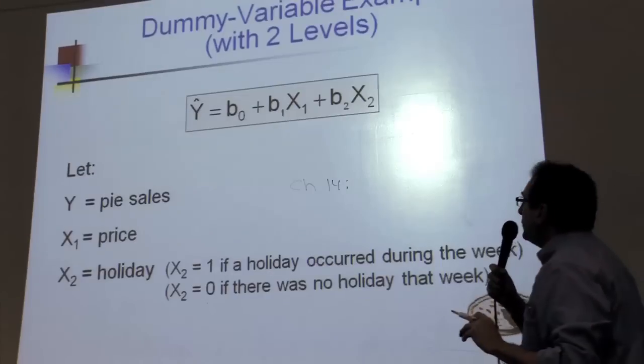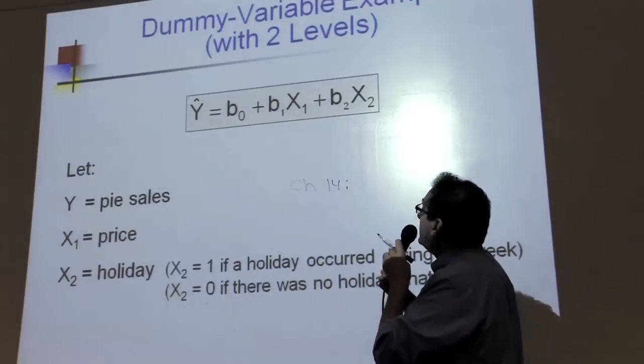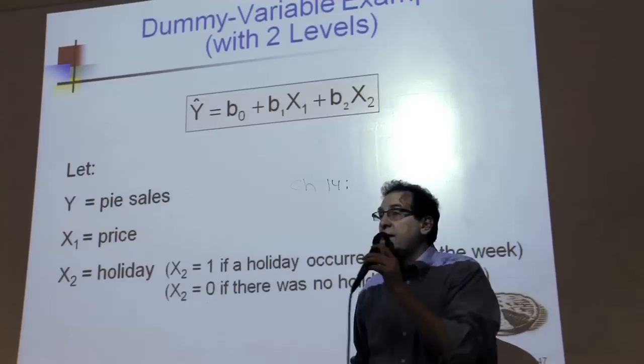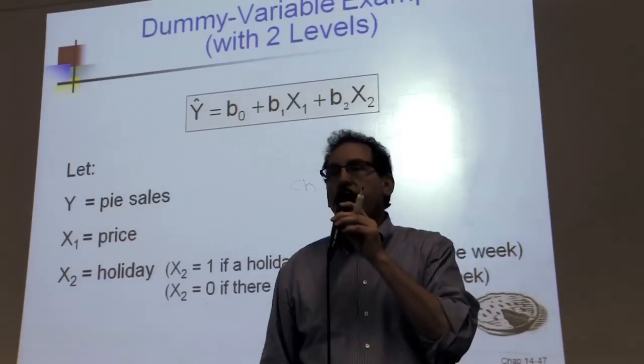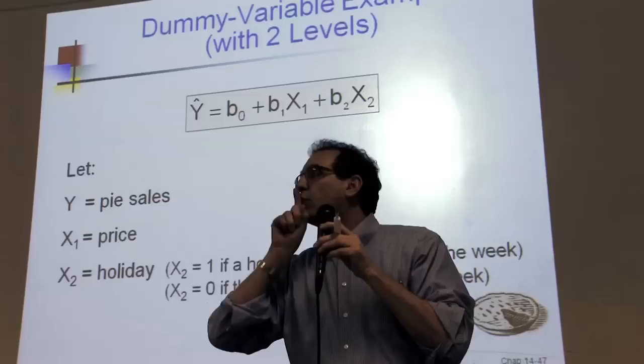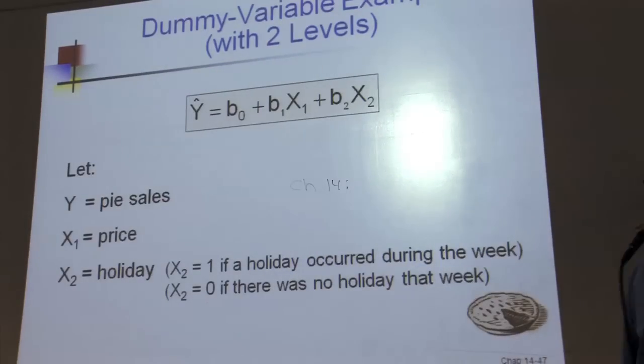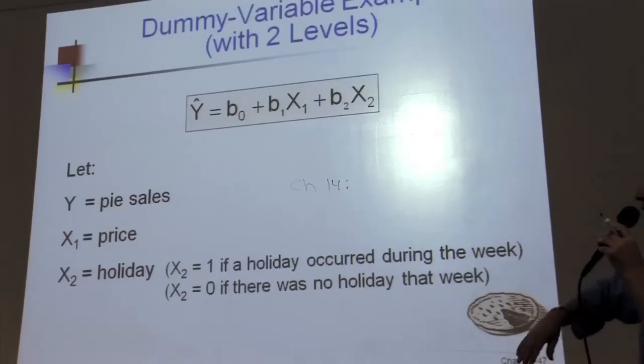Okay, so we have sometimes, this is a basic model involving two variables, but it's possible that one of the variables doesn't have to be a continuous variable, but it can be a category, like male or female, black or white, or holiday sales versus not holiday sales.